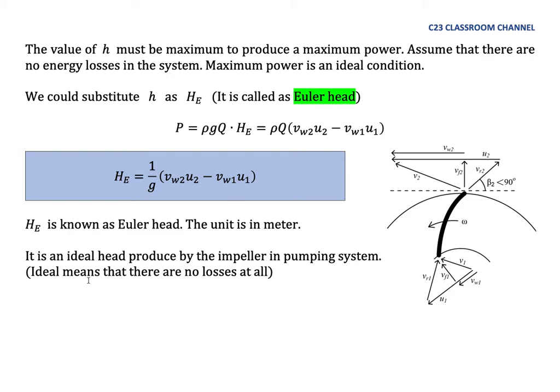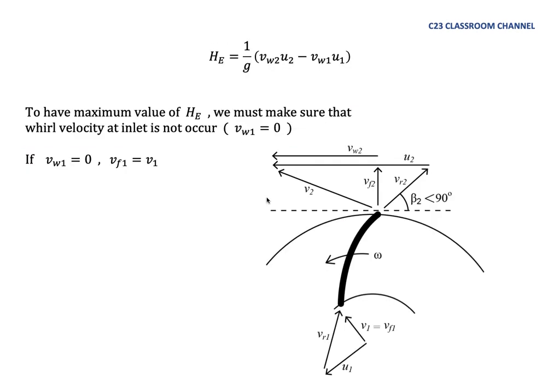Ideal here means that there are no losses at all. So this is an ideal head. Euler head is equal to 1 over G, V world 2, U2 minus V world 1, U1. And this is the ideal head of the pump.